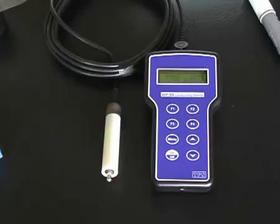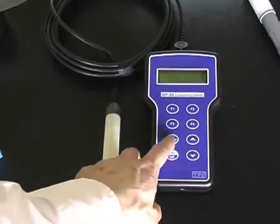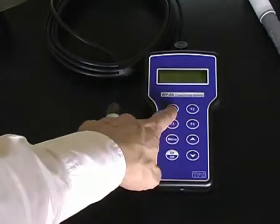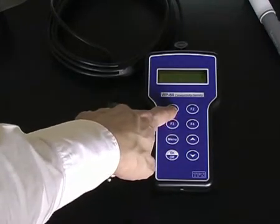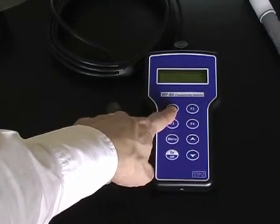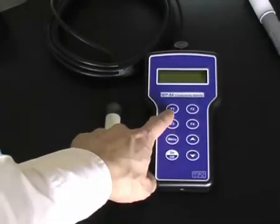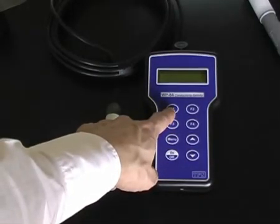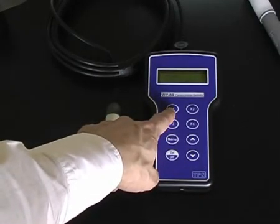To calibrate the TPS-WP84 conductivity TDS meter, the procedure is the same as the 90FLT. Press Menu, F1 for Cal, F1 for conductivity, and then press F1 to accept calibration instead of the Enter button.